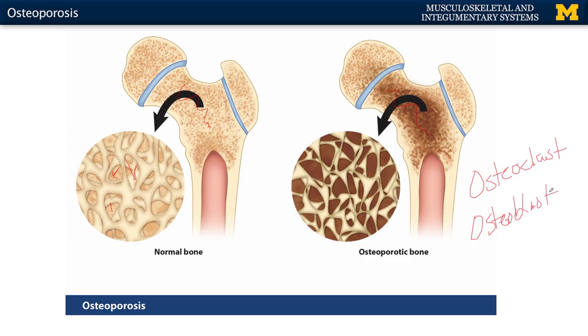What isn't normal is osteoblast activity. You don't have the replacement of new bone keeping up with the resorption or breaking down of bone. So you're left with spongy bone regions that have significantly larger spaces and holes within the bone. Any time you don't have bone where it needs to be structurally, that can lead to fractures — and that's really the number one symptom of osteoporosis.